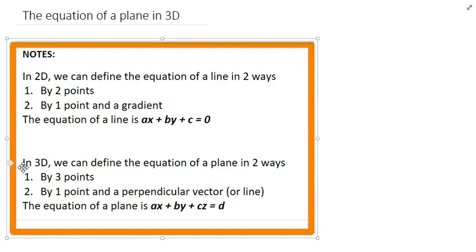In 3D, which is what we're more concerned with, we can define the equation of a plane in two ways: using 3 points or 1 point and a perpendicular vector or line. The equation of that plane is ax + by + cz = d.